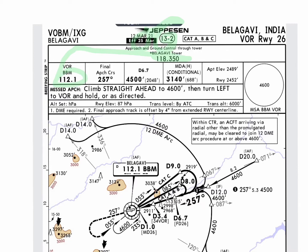Final approach course is 257, which you will set. Then we have MDA 3140. As it is a VOR approach, VOR Runway 26, you will put 3140 plus 50, so 3190 as your minima.